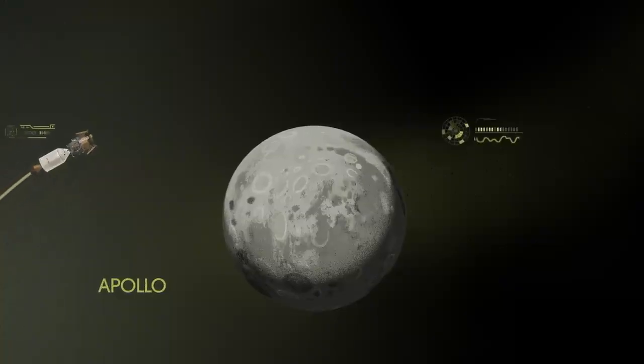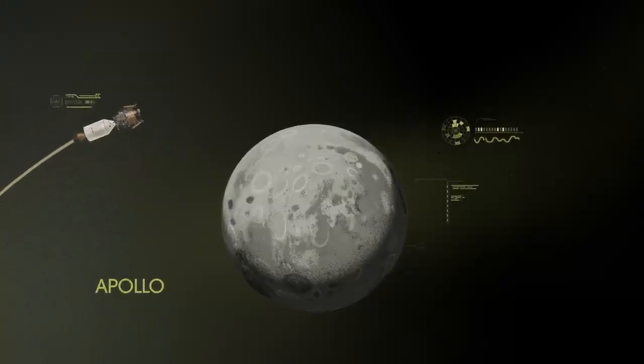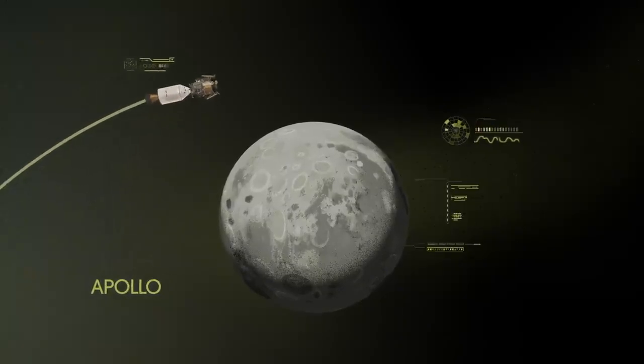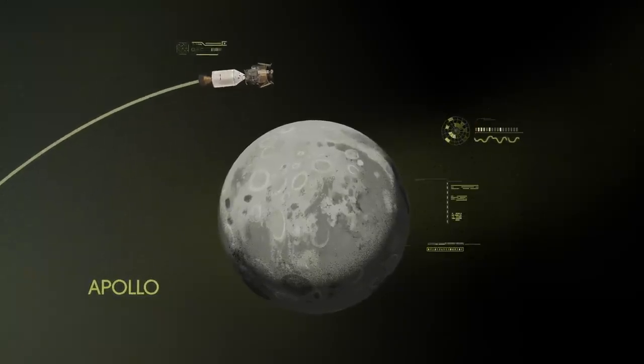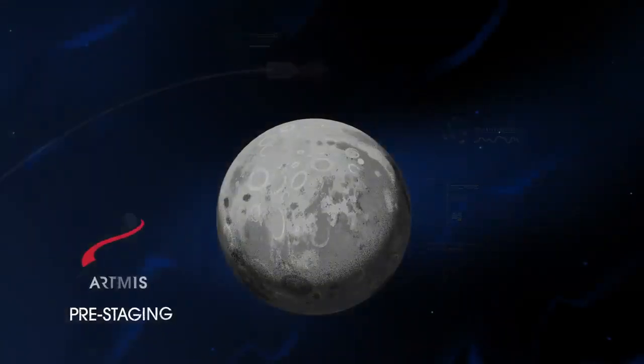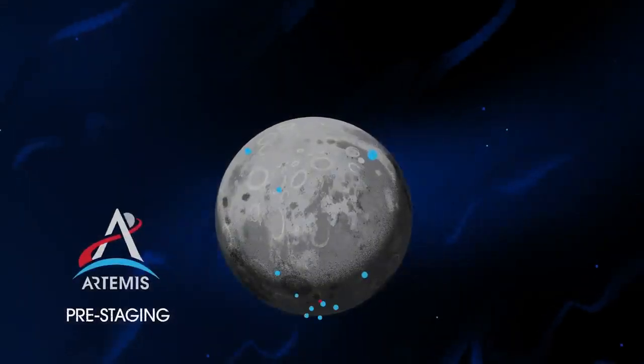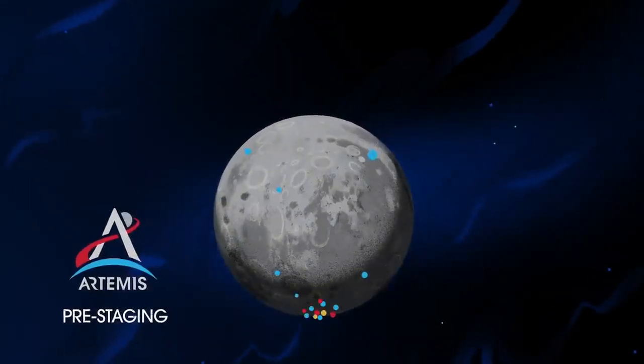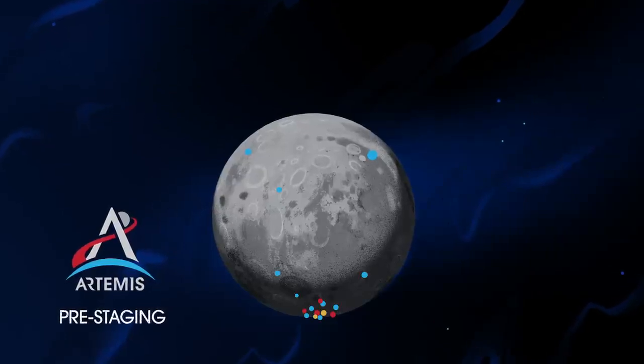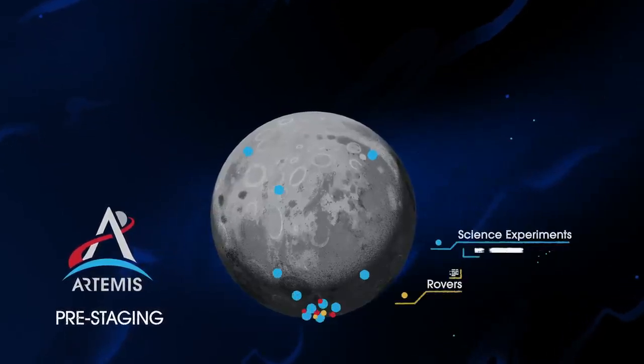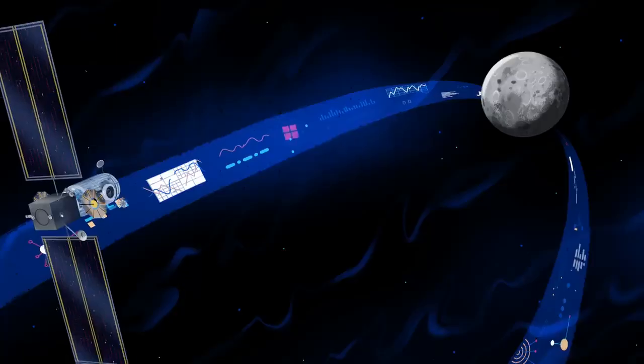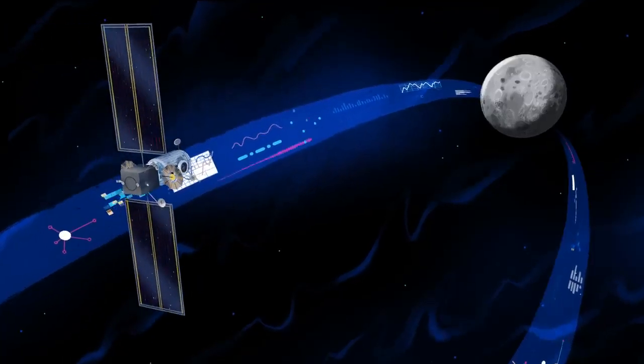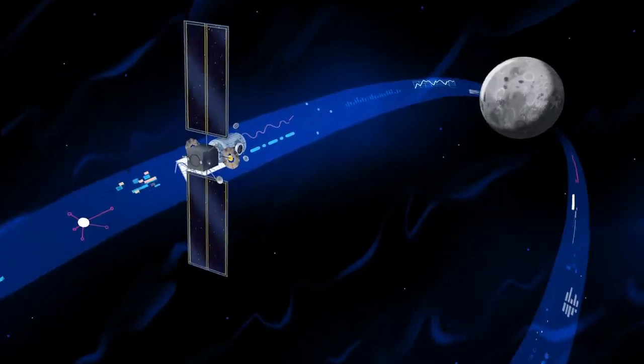Instead of requiring Orion to serve as an expendable lunar command module or to carry a constrained lunar lander, the Artemis missions will take advantage of a different approach: pre-staging. Everything needed for lunar missions will be positioned in advance by commercial and international partners. This includes rovers, science experiments, and human-rated systems on the surface, but also includes a dedicated lunar station in orbit around the Moon called Gateway.